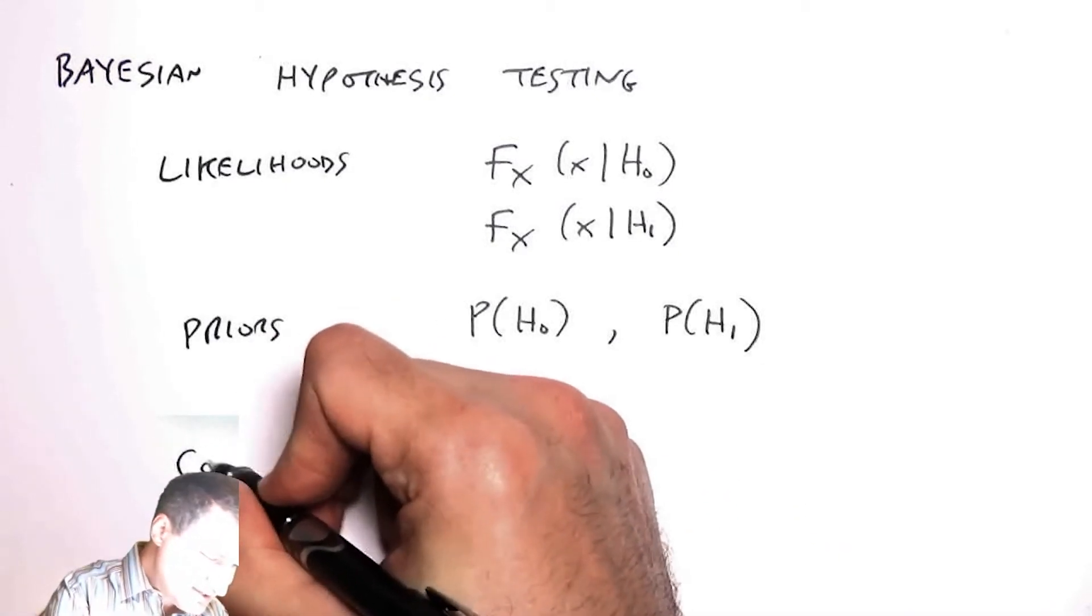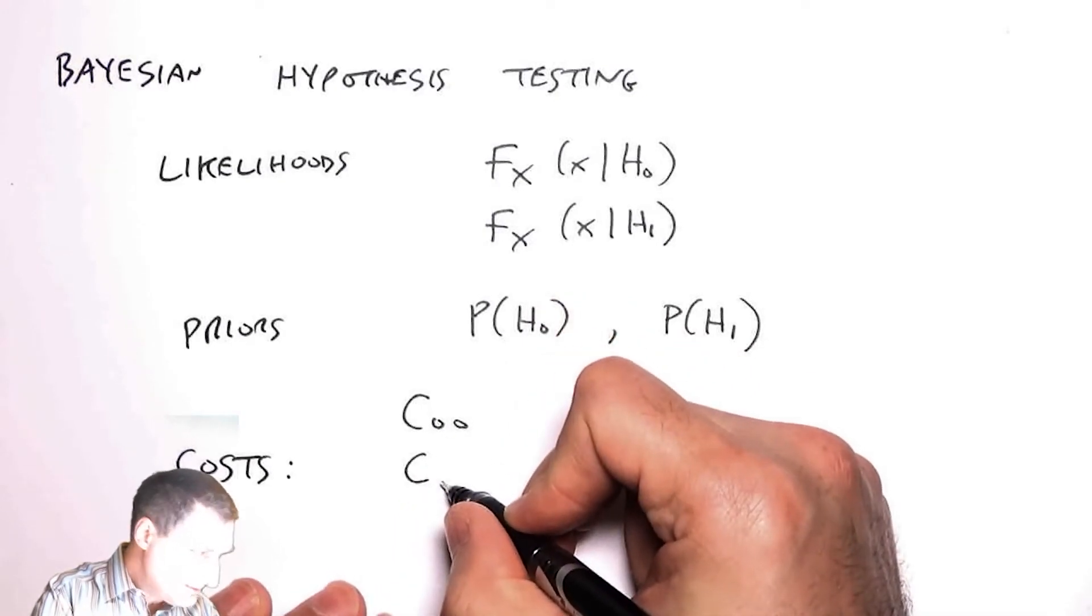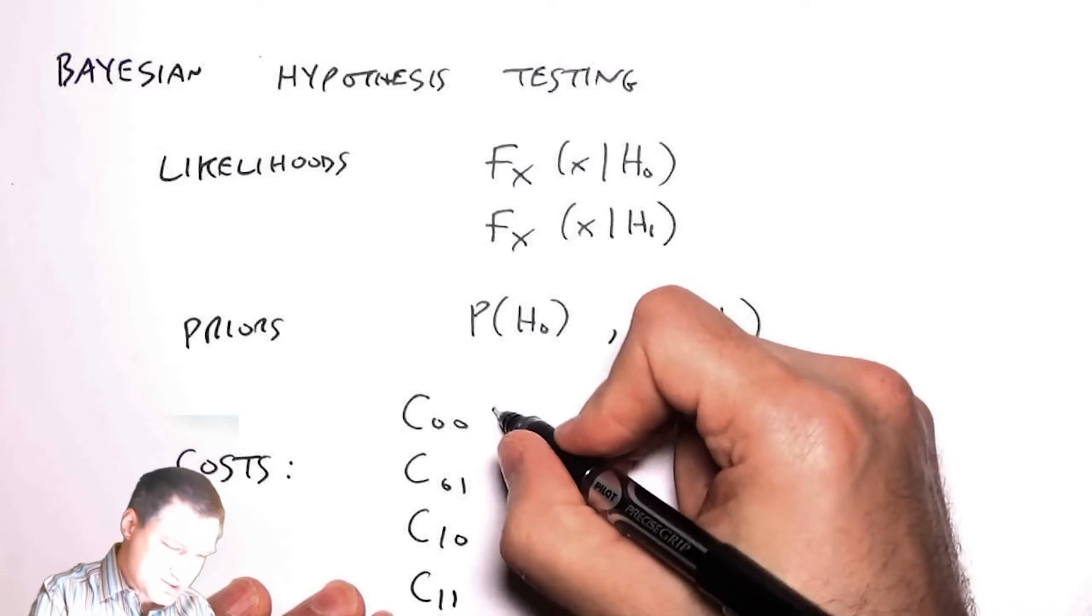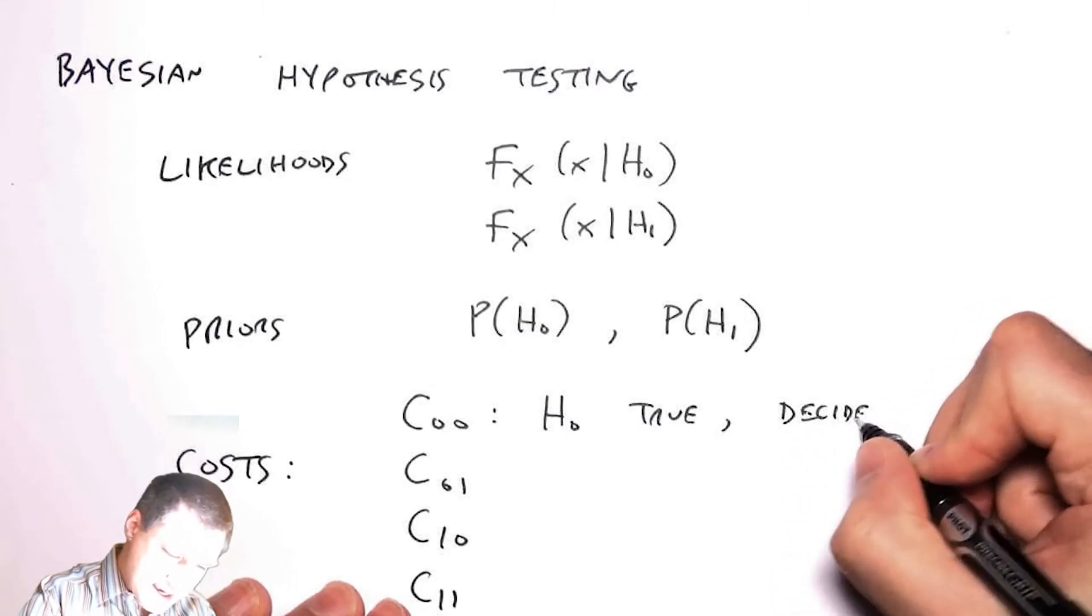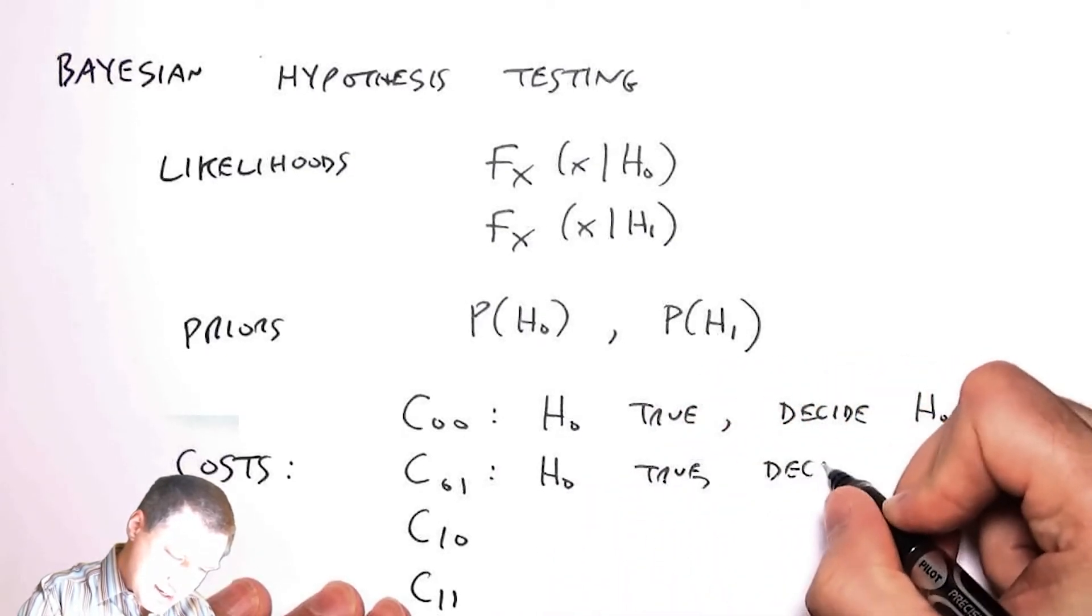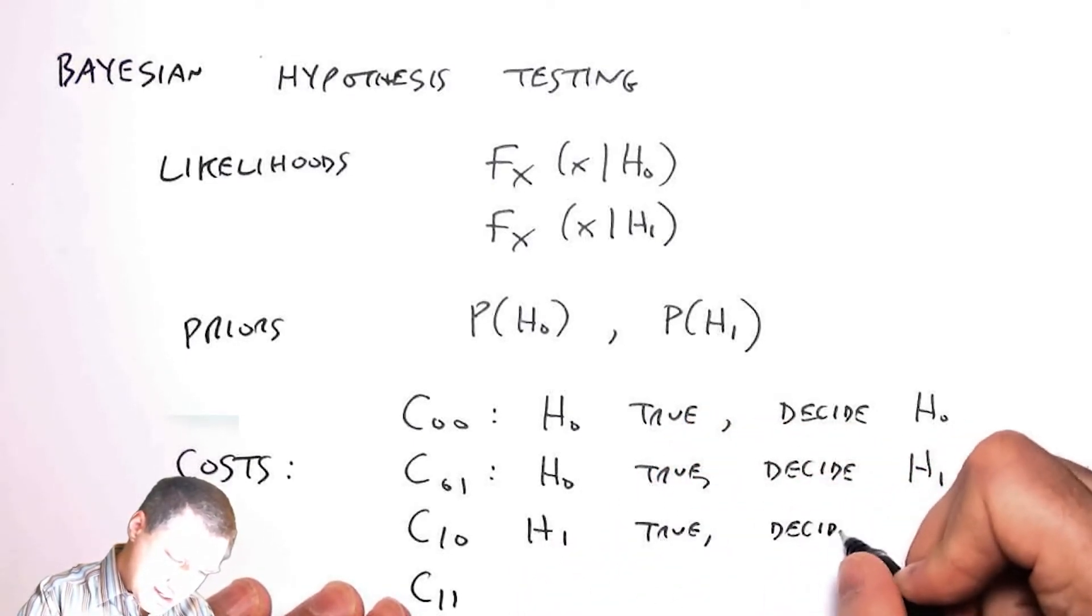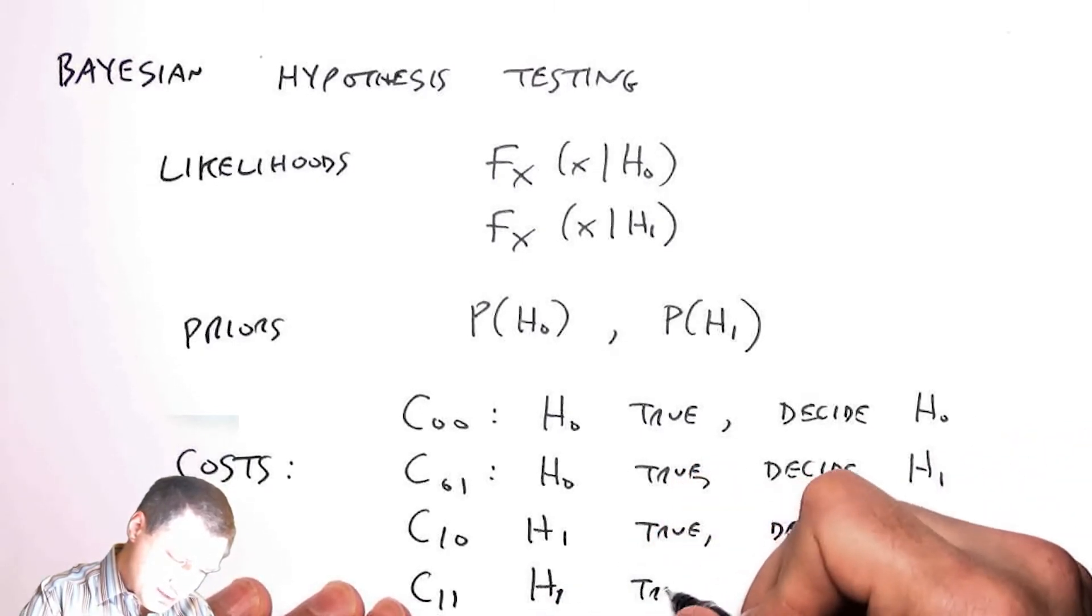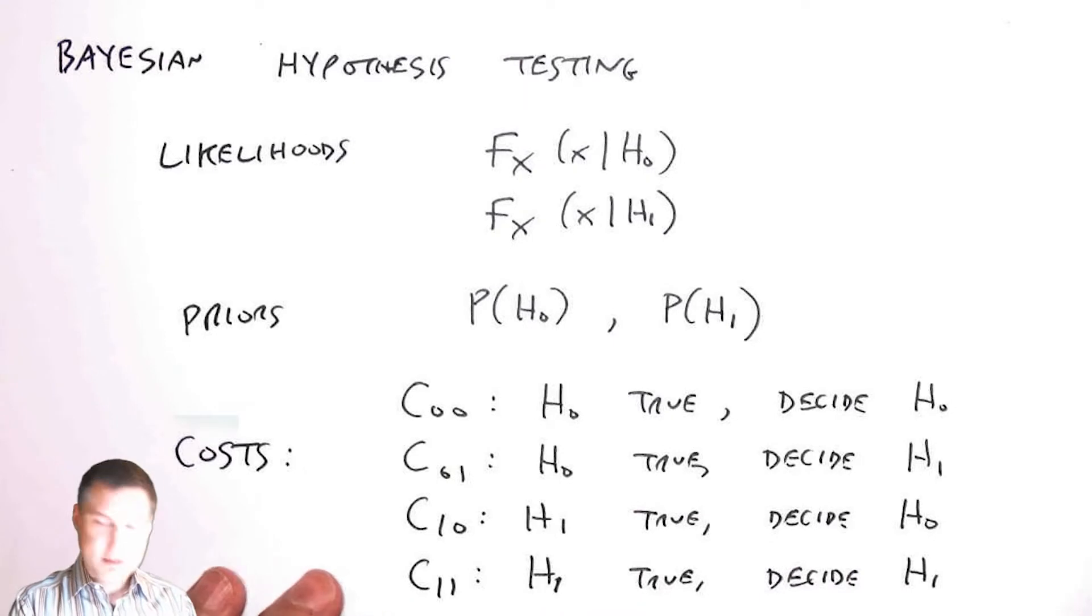And then we're also going to have costs. And this is kind of a new twist. The twist here is basically saying, I'm basically going to reward or penalize you for making various decisions. So this is like basically saying, this is the cost of H0 being true, and I decide H0. This is the cost of H0 being true, and I decide H1. This is like the opposite, that H1 is true, and I decide H0. So usually these, first one, last one are usually set to be zero, because it's not like you incur any penalty for making the right choice.